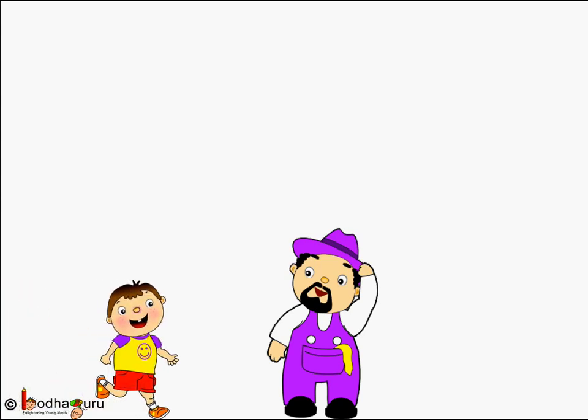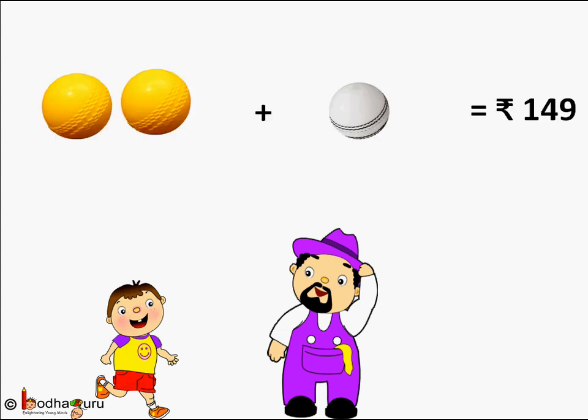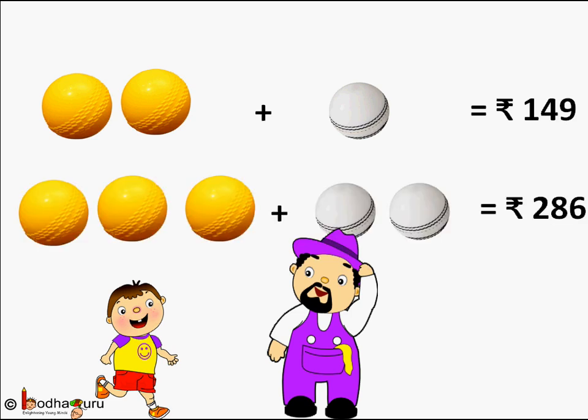Let us take an example. Amun went to the shop to buy one yellow rubber ball and one white leather ball. Now the shop owner gave options of two packs. Option 1: a pack of two yellow rubber balls and one white leather ball in 149 rupees. Option 2: a pack of three yellow rubber balls and two white leather balls in 286 rupees.